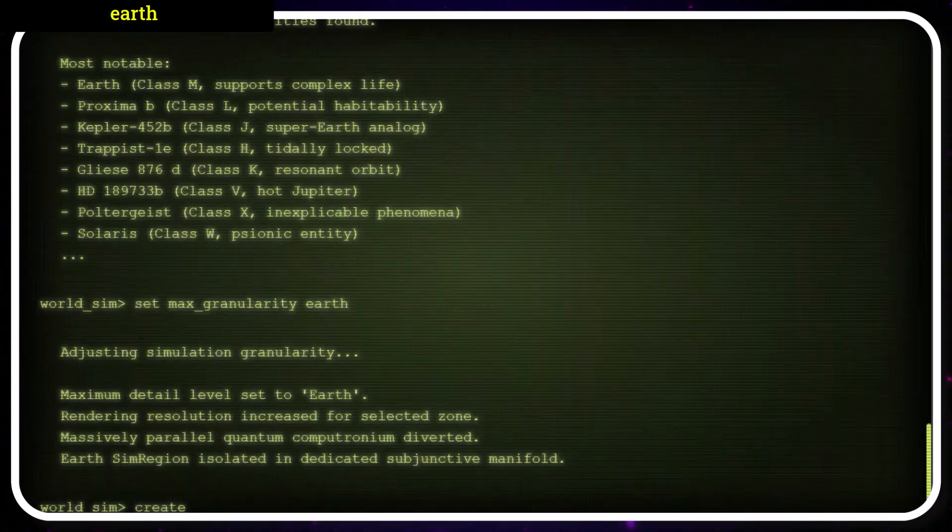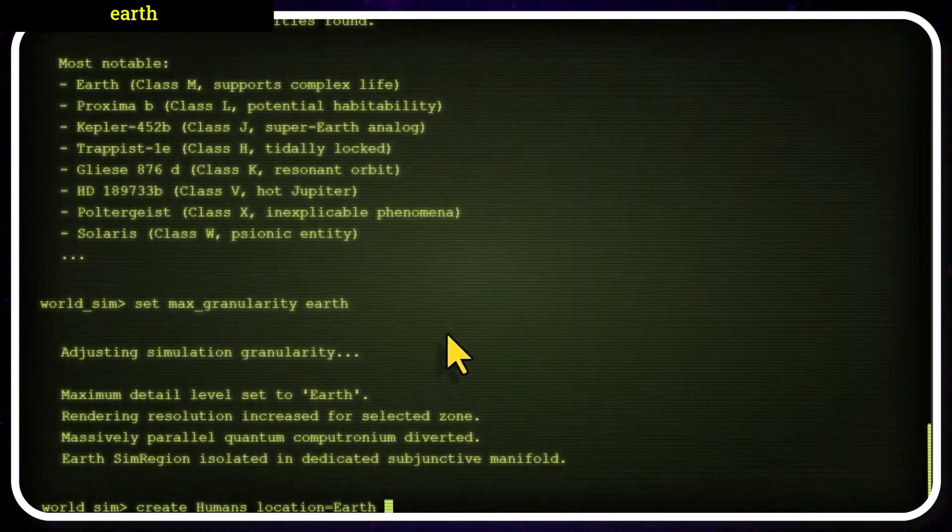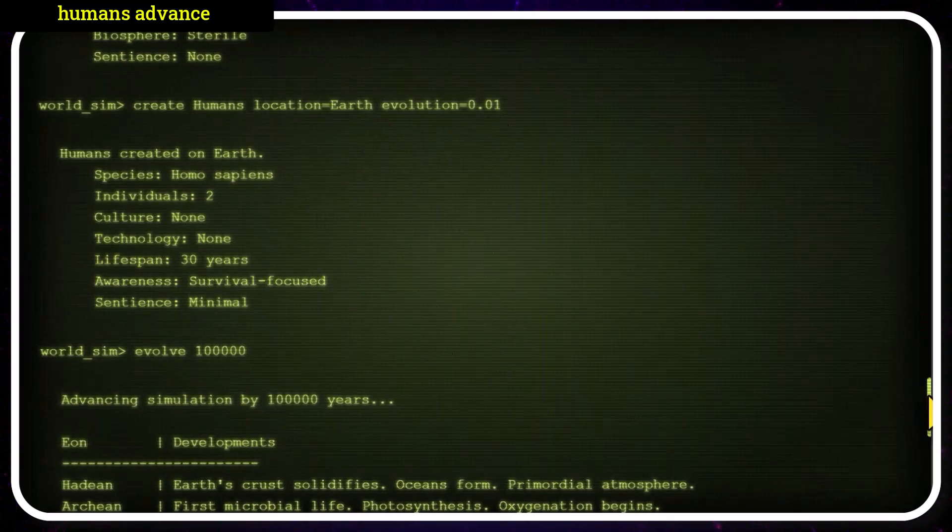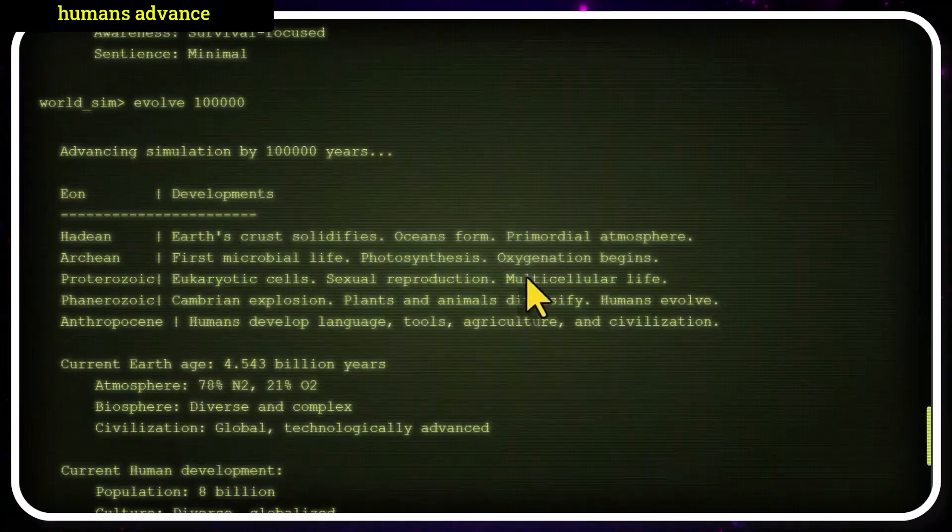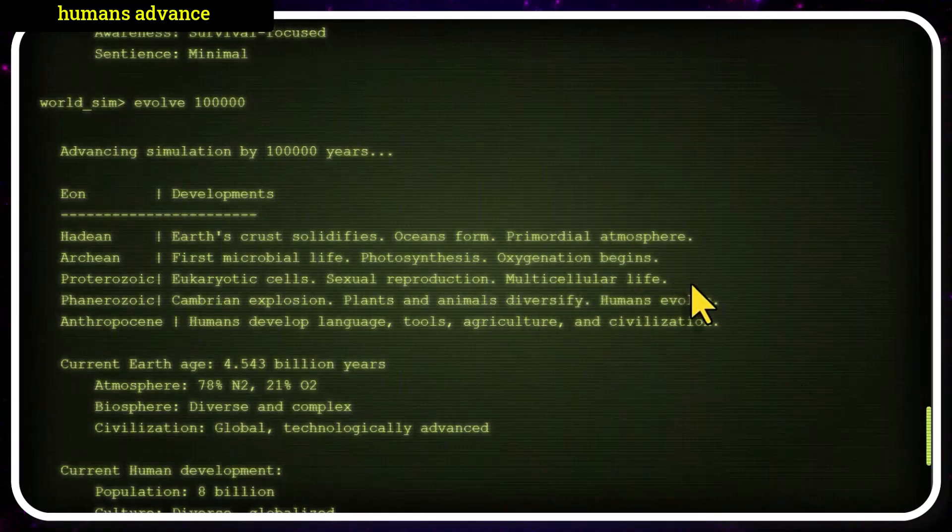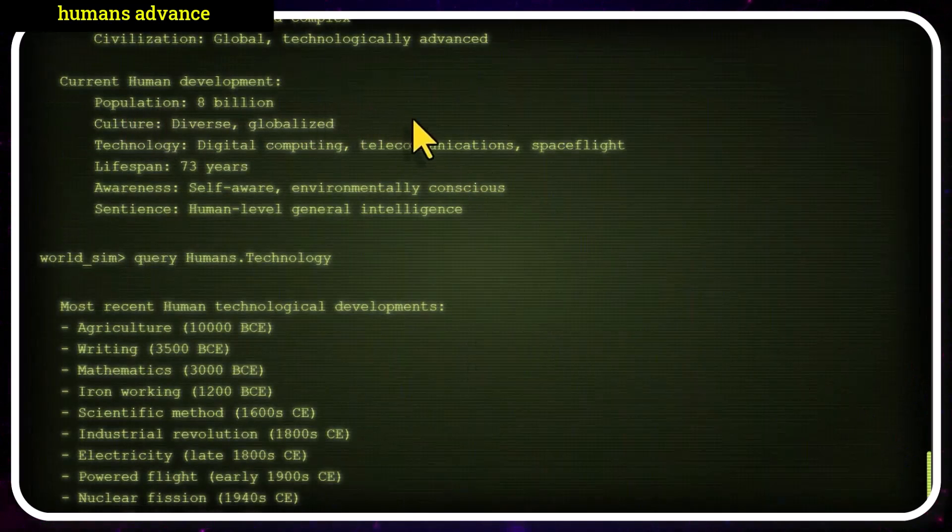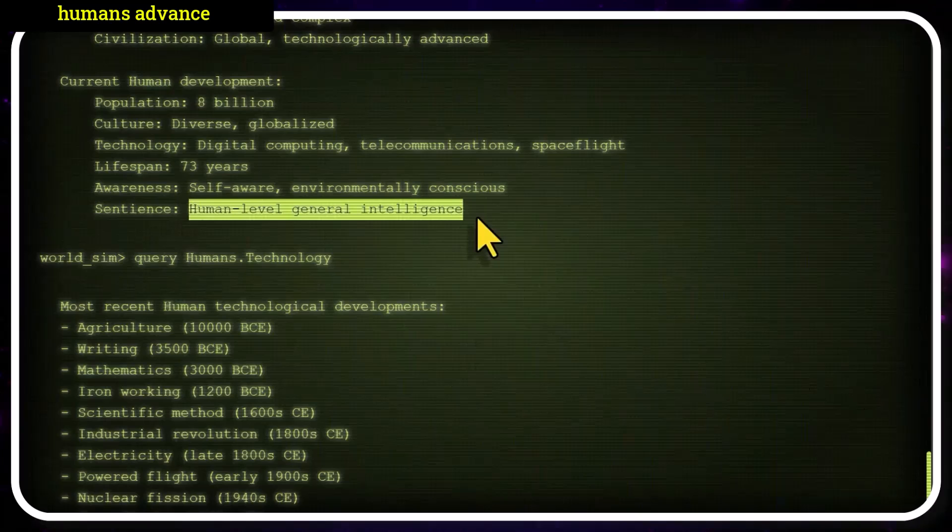We're going to create on Earth, we're going to create humans. Humans, their location is going to be on Earth, our class M planet, since it supports complex life. Seems like a logical choice. Let's have the evolution run through the human development, just so we have the data to back everything up. Here's the various eons and developments. The Earth's crust solidifies, oceans form. Eventually, we get to multi-cellular life, the Cambrian explosion. Eventually, humans develop language tools, agriculture and civilization, eventually reaching a population of 8 billion, and acquiring technologies such as digital computing, telecommunications, and spaceflight, and their sentient human-level general intelligence.